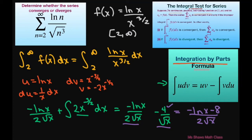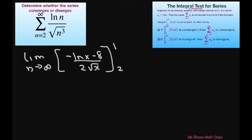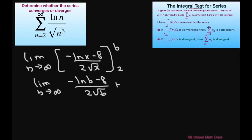Now let's go ahead and evaluate the limit. We want to take the limit as b approaches infinity of negative ln of x minus 8, divided by 2 square root of x, evaluated from 2 to b. This gives us the limit as b approaches infinity of negative ln of b minus 8 divided by 2 square root of b, plus ln of 2 plus 8 divided by 2 times the square root of 2.